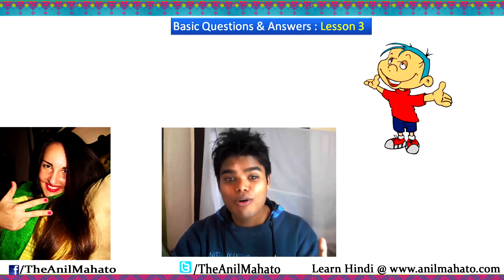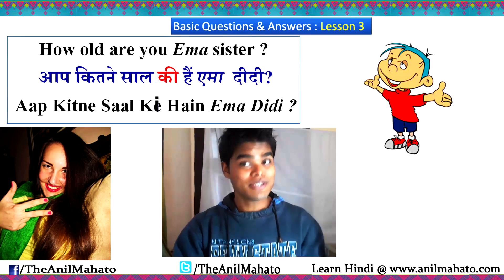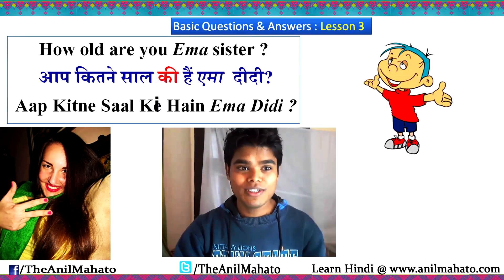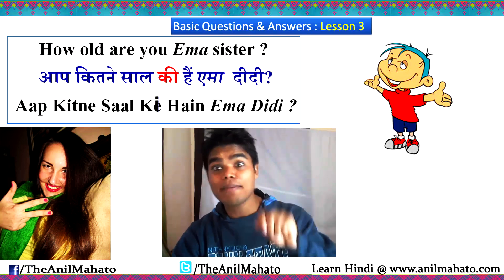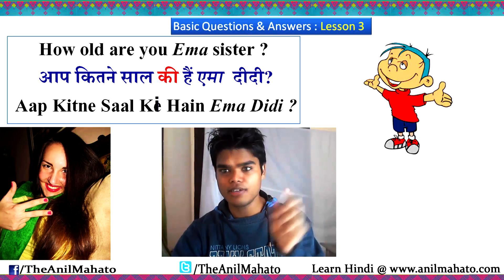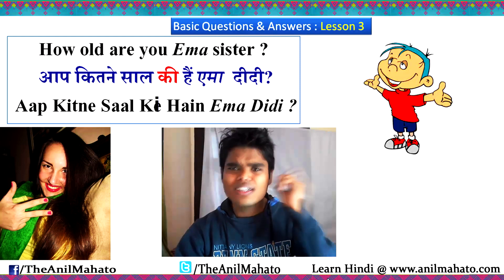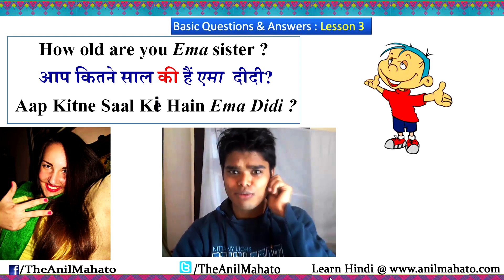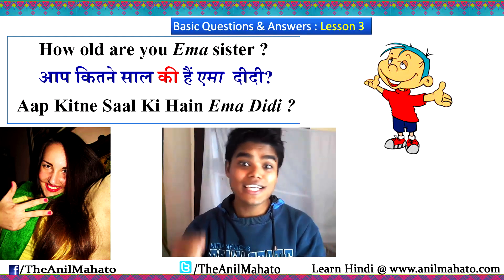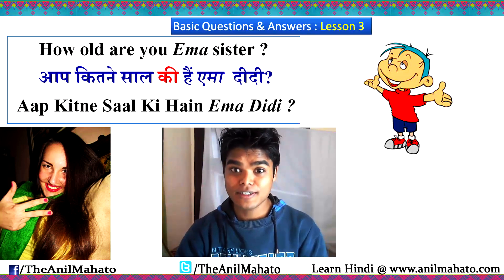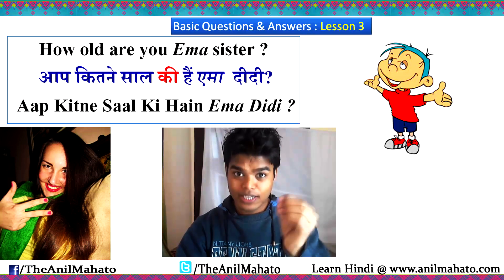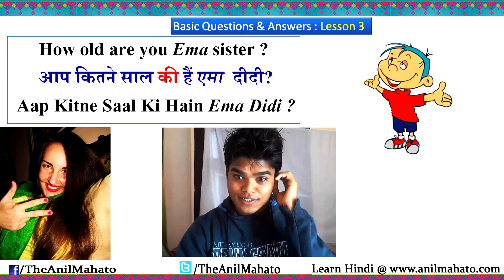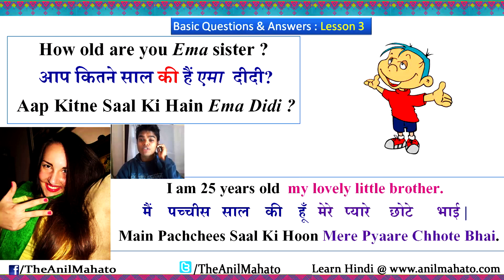Now the little boy is asking this girl: 'How old are you, Emma sister?' — 'aap kitne saal ki hain, Emma didi?' 'Didi' means elder sister. Notice 'ki' is used again here. She replies: 'I'm 25 years old.'